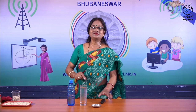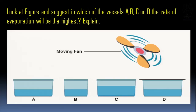One more interesting question: you have four containers — A, B, C, D. In which of these four containers is evaporation highest? It seems D has more surface area, but D is covered, so evaporation cannot happen there. Comparing A and C, which show nearly equal surface area — my answer is C. Why? Because C is nearer to the fan, and wind speed is more, so evaporation is also more.